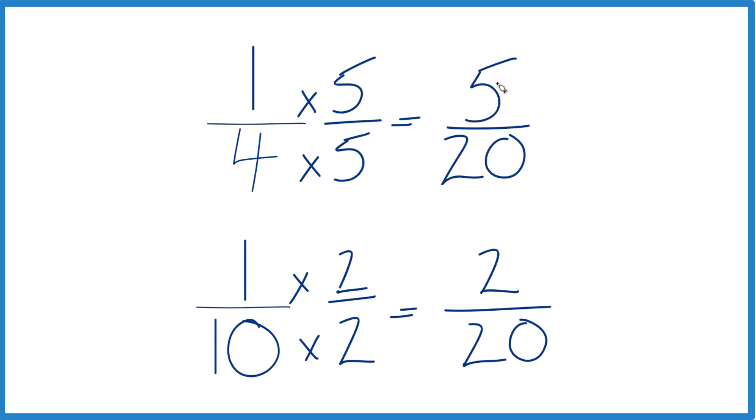Now we can compare the numerators. 5 is greater than 2, since we have the same denominator. So, 5 twentieths is greater than 2 twentieths. It's greater by 5 minus 2, so 3 twentieths.